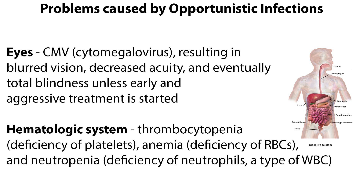The eyes are vulnerable to CMV, or cytomegalovirus, resulting in blurred vision, decreased acuity, and eventually total blindness, unless early and aggressive treatment is started. Effects on the hematologic system are seen as thrombocytopenia (deficiency of platelets), anemia (deficiency of red blood cells), and neutropenia (deficiency of neutrophils, a type of white blood cell).